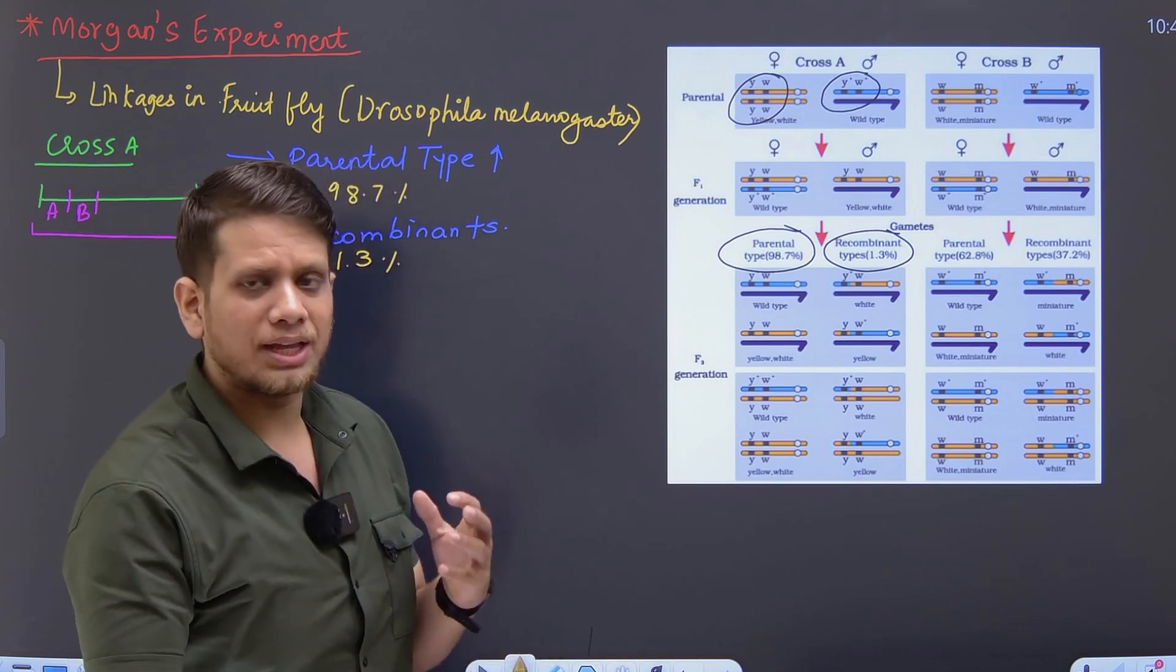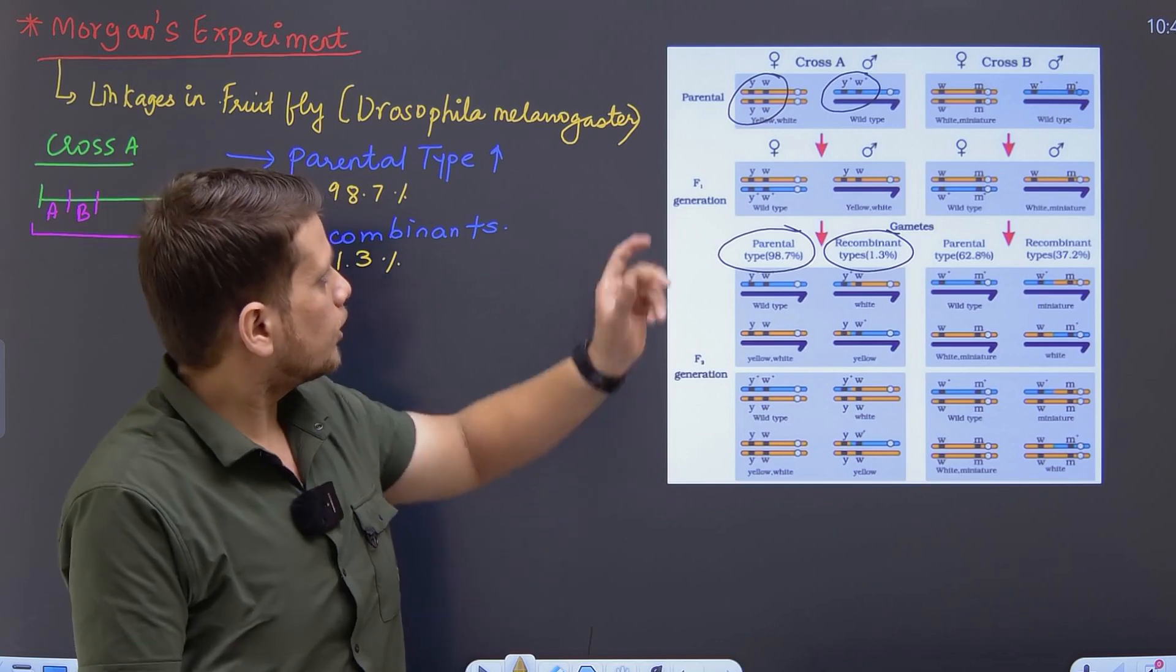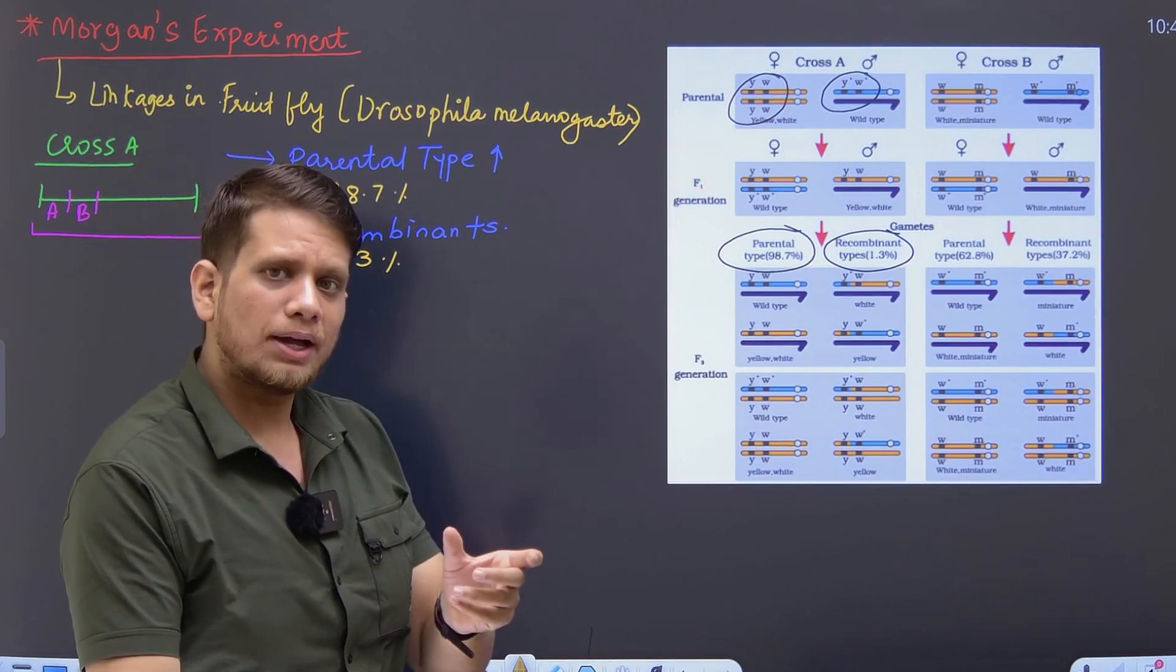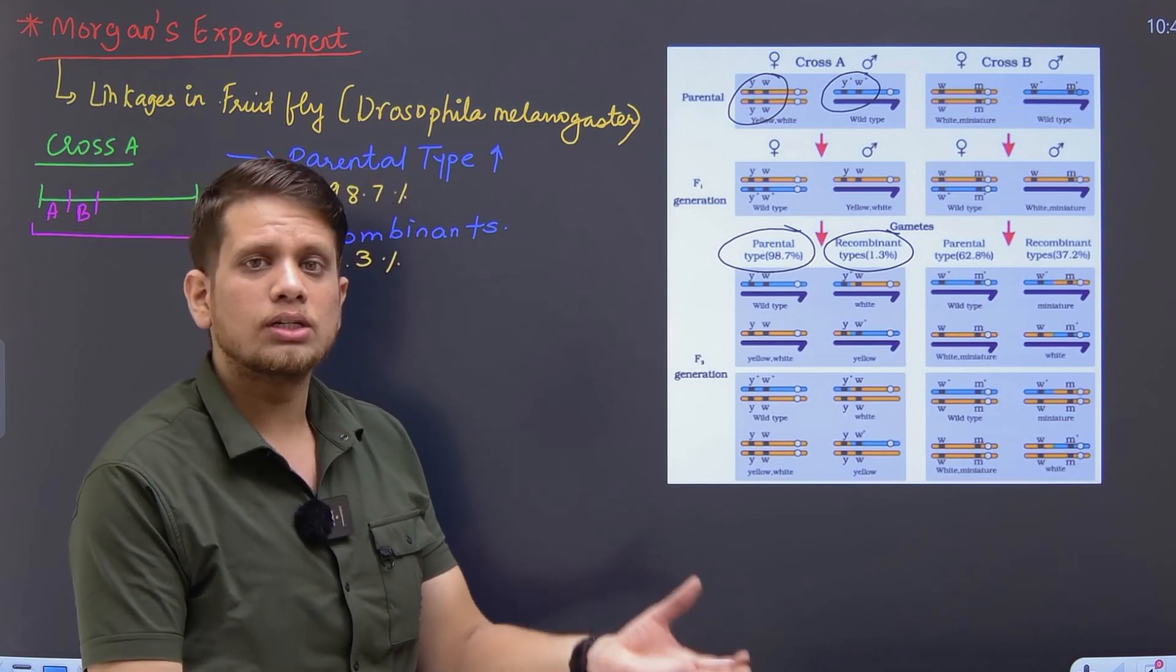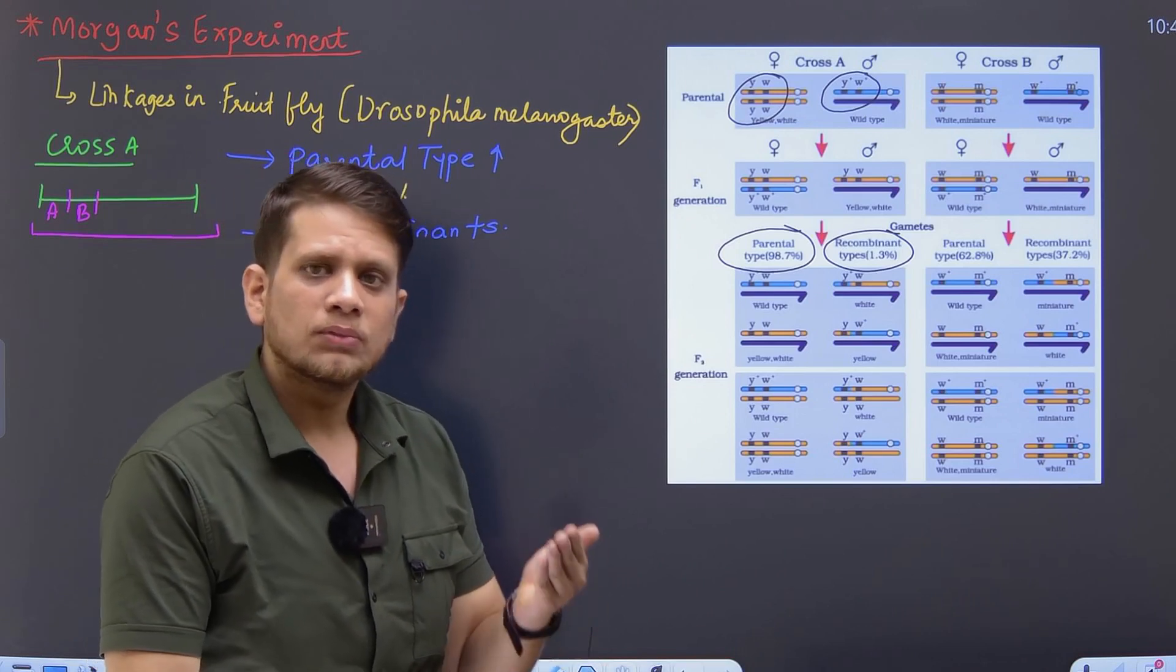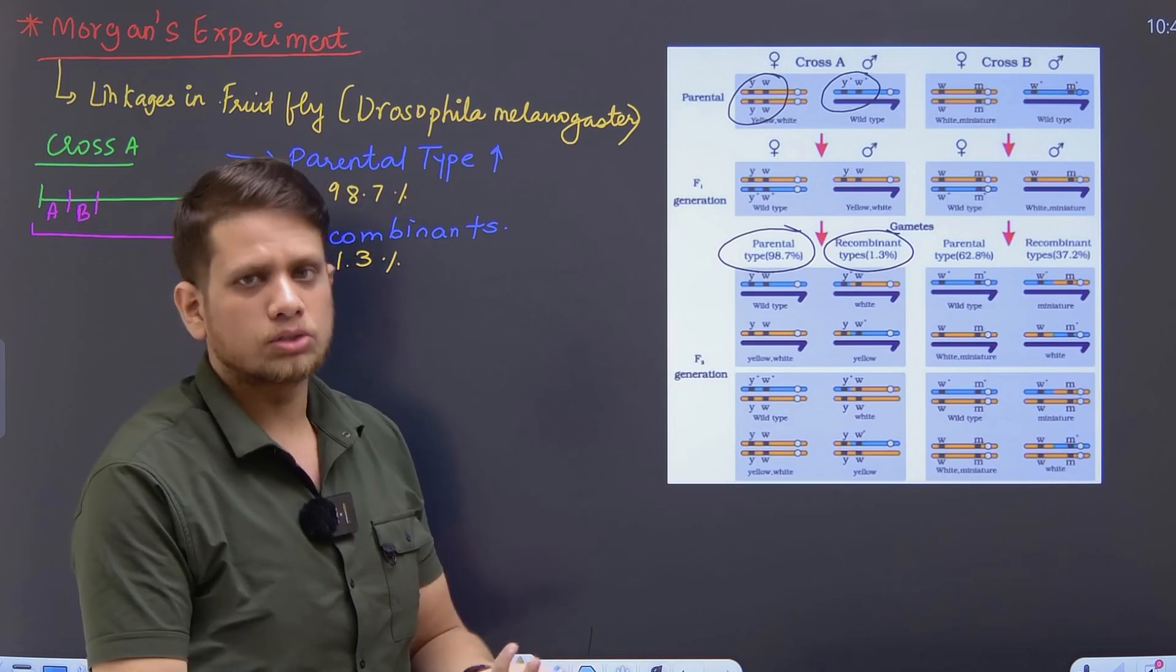What does this tell us? This makes us understand that when the genes are very close, Morgan took two different genes. He found that on one chromosome they are very close together. And because these genes were closely associated to one another, he concluded that these genes which are very close may not undergo the process of crossing over.